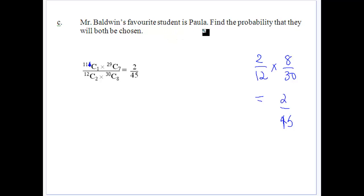And Mr. Baldwin's favorite student is Paula. Find the probability that they'll both be chosen. Well, again, you can look at it this way. Mr. Baldwin's chosen, so there's one teacher out of the 11 to be chosen. And if Paula's already been chosen, then there's 29 students out of the seven. Over the total gives us two out of 45. Or Mr. Baldwin's got two chances in the 12 to be chosen, and Paula's got eight chances in the 30 to be chosen, which gives you two out of 45 as well.